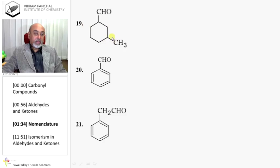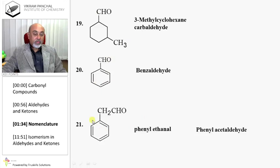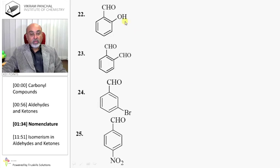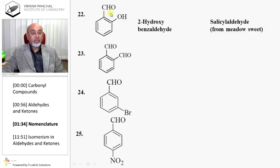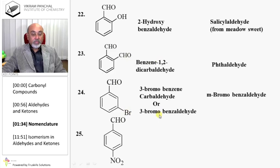Here OCH3 is in the branch, so it is 2-methoxybutanal, or alpha-methoxybutyraldehyde. This is an alicyclic compound with CHO and a methyl group; the third carbon has a methyl group, so it is 3-methylcyclohexanecarbaldehyde. This is an aromatic compound, so it is benzaldehyde. Phenylethanol is also known as phenylacetaldehyde.